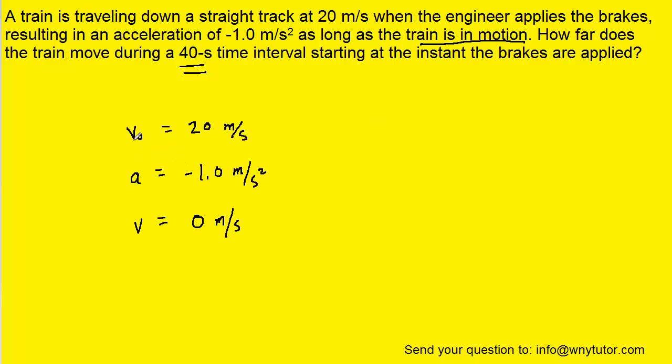Now we were told that its initial velocity is 20 meters per second. The acceleration again is negative 1 meters per second squared. What we're going to do is make the assumption that the train is going to stop eventually. So we're calling the final velocity 0 meters per second, and what we want to figure out is the time required for that to happen.